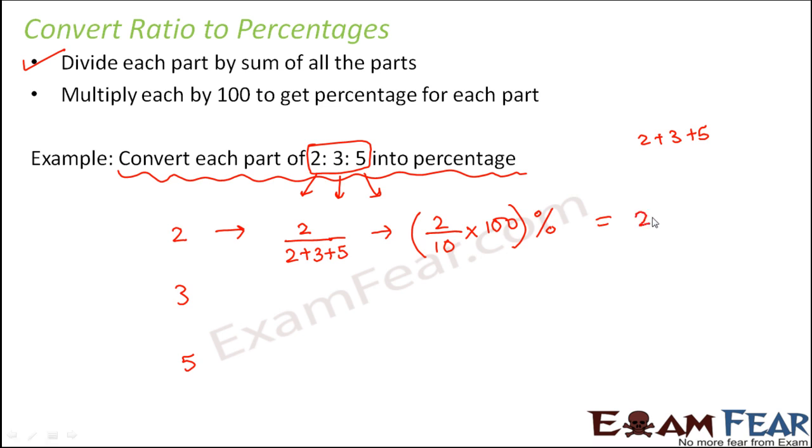So in this way you get it as 20%. Similarly for the second part you can do the same thing. 3 divided by 2 plus 3 plus 5 which is 3 divided by 10 into 100. So this becomes 30%.